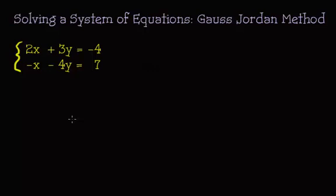Welcome back to our series on systems of equations. We're going to focus on the Gauss-Jordan method today, which is row reducing our augmented matrix until we get our solutions. Take a look at this example: we have 2x plus 3y equals negative 4 and negative x minus 4y equals 7.